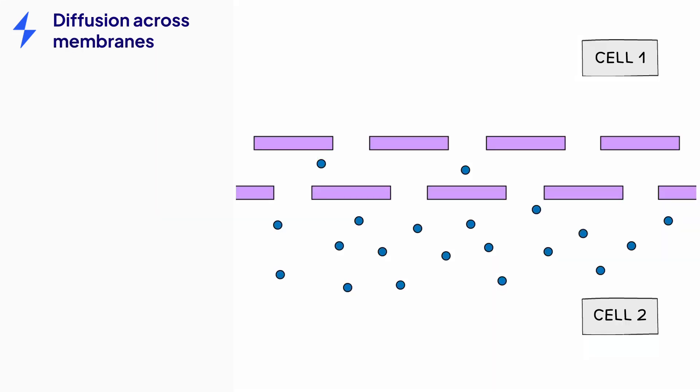Diffusion also occurs across membranes. Here we can see two partially permeable membranes next to each other. These could be the cell membranes of two neighboring cells. The term partially permeable means that only certain molecules can pass through them.